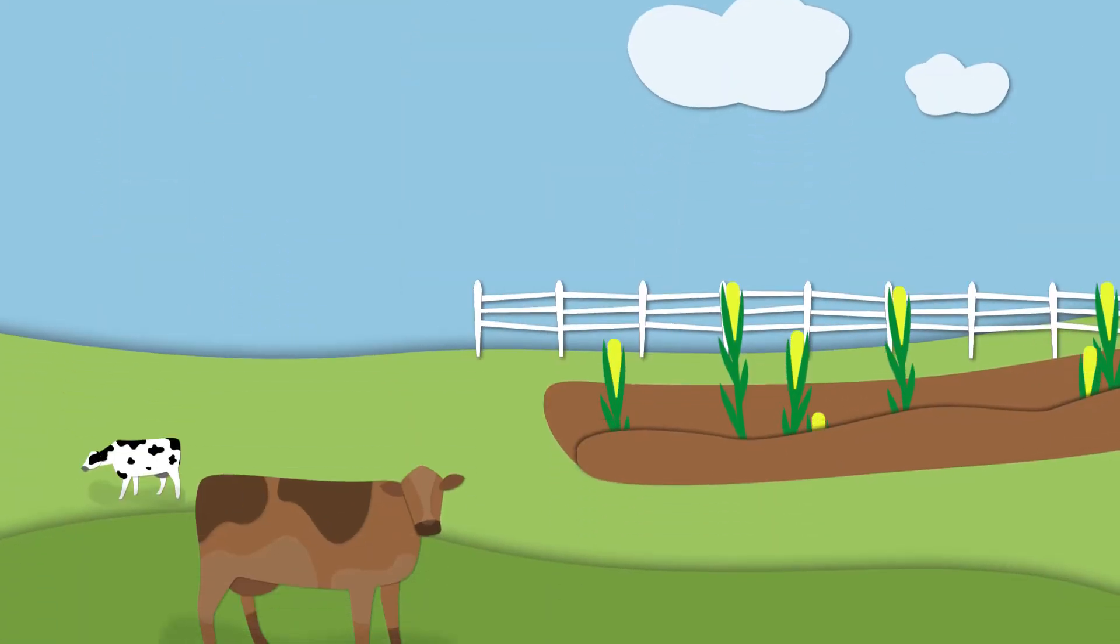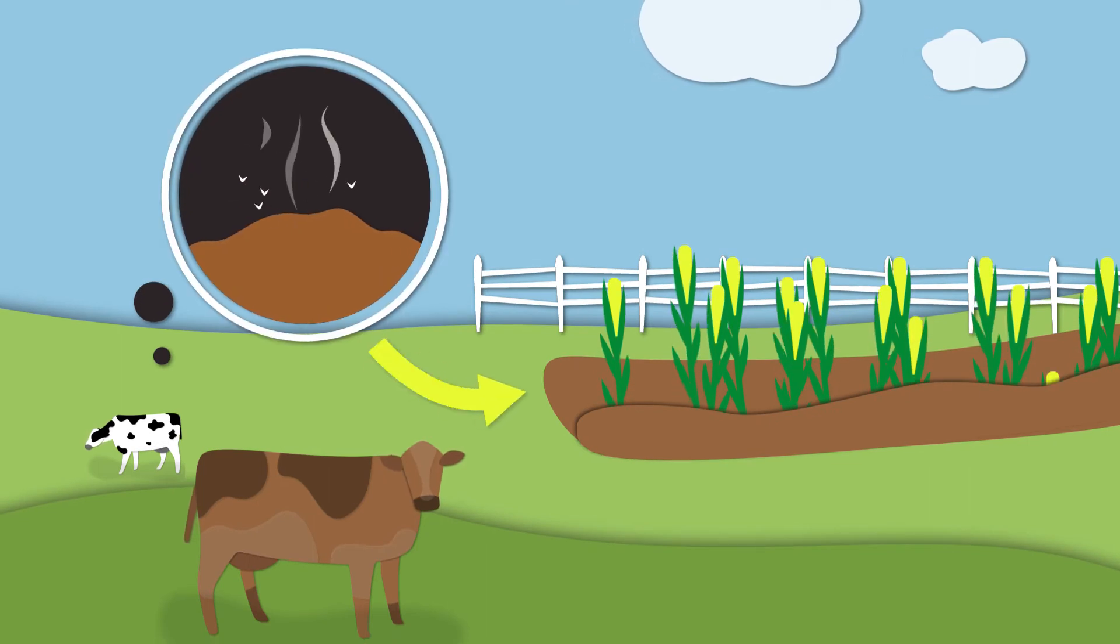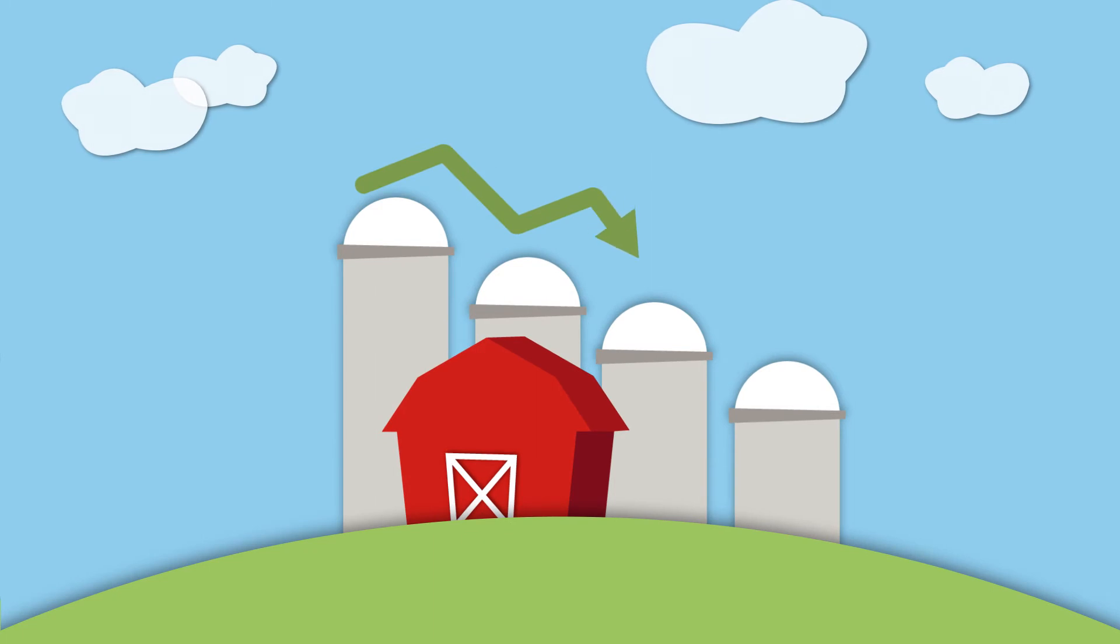Plus, what's left of the manure can be used as fertilizer for crops. And the way farms handle crops and soil can dramatically impact their carbon footprint.